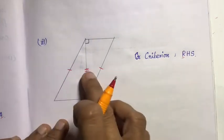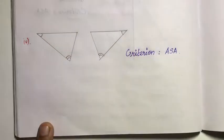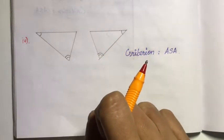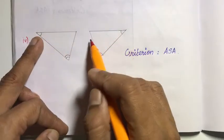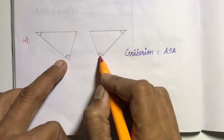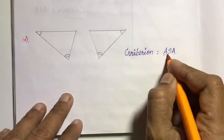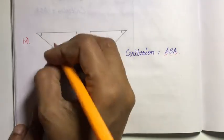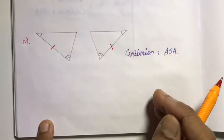So that is what we need to mark for the RHS portion. Next, the fourth subdivision: the two triangles follow Angle-Side-Angle criteria. We need to mark two angles and one included side. In this triangle and that triangle, these two angles are equal. Now mark one side — the side included between the two angles. So the side is marked accordingly.